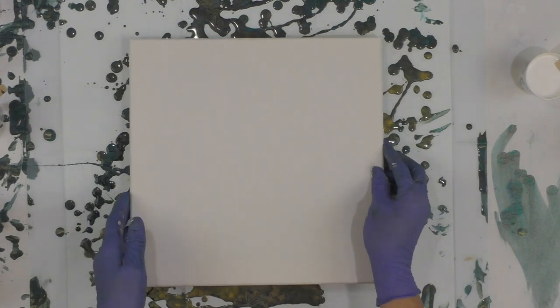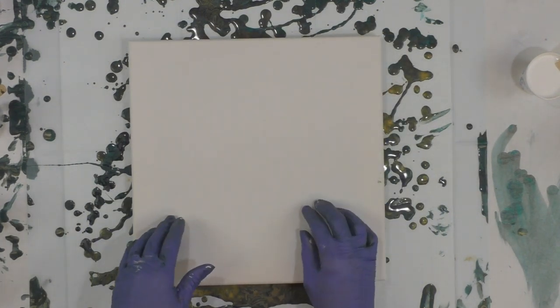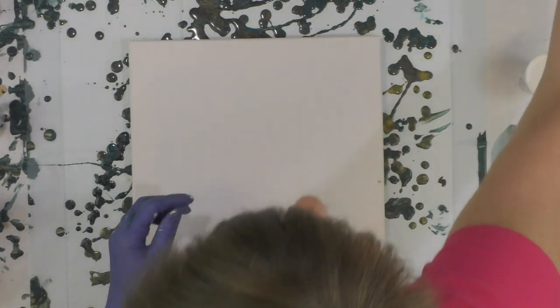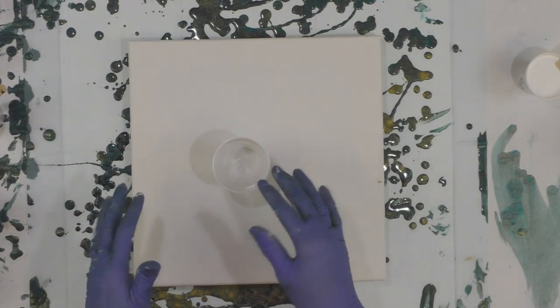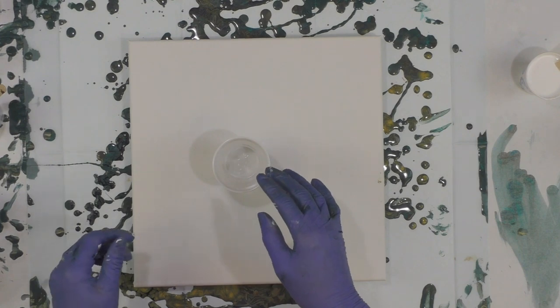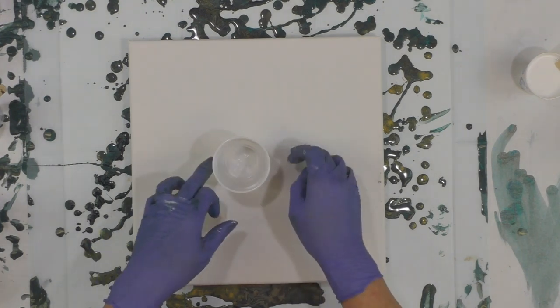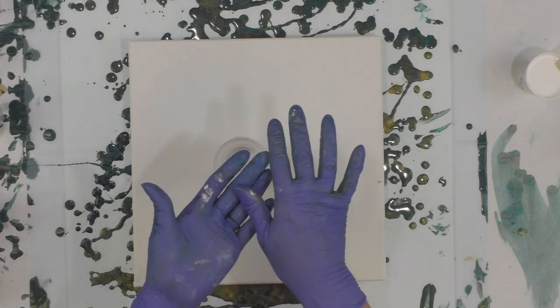I'm going to do a 12 by 12 inch canvas and I think I'll do a five ounce cup and just maybe try to finish out my paints here. I want the center to come out first.